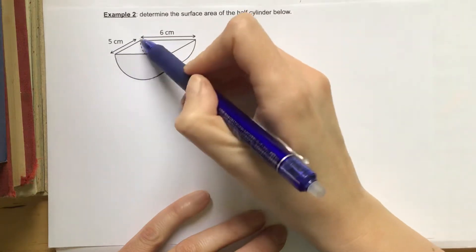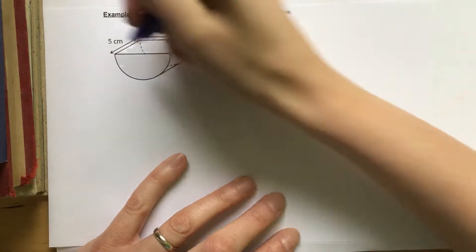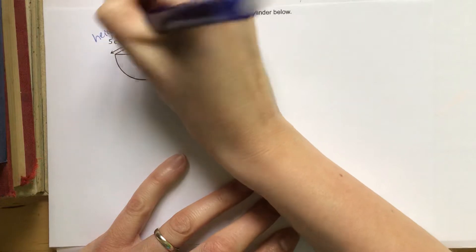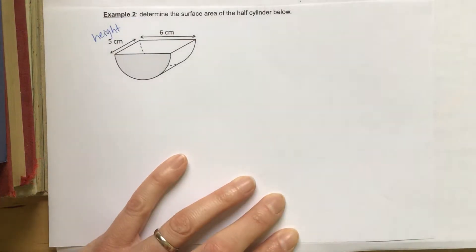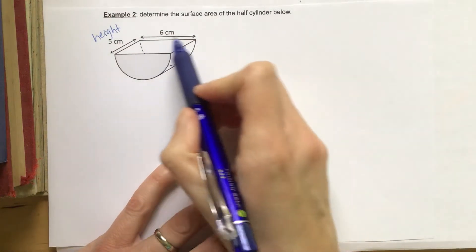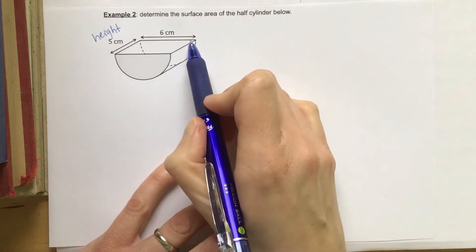So right here, this is the height of our cylinder. Okay, so our height is equal to 5 centimeters, and here this is the diameter of our cylinder.